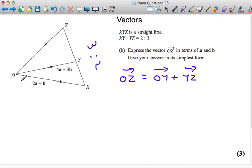Now OY is not a problem. I know that's 4A plus 3B. But what about YZ? Well YZ is a continuation of the straight line. But in terms of size, if that's two parts, this is three parts. So it's one and a half times as long as XY.